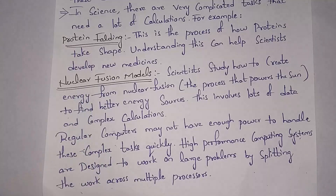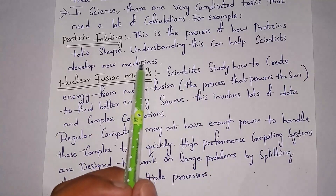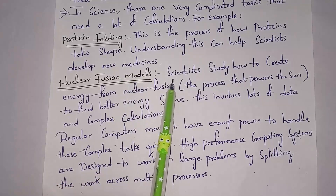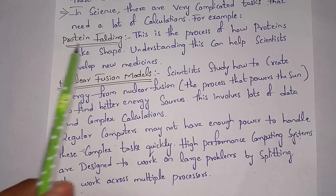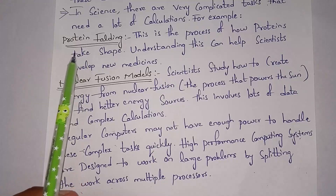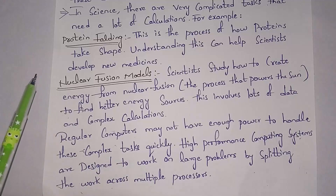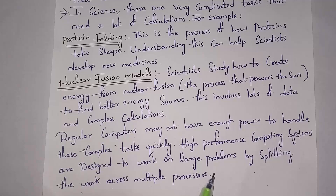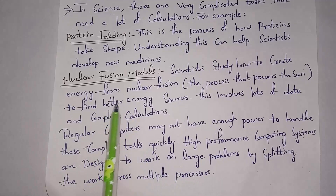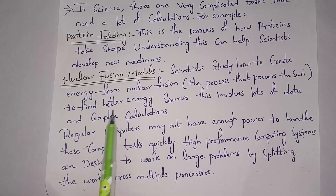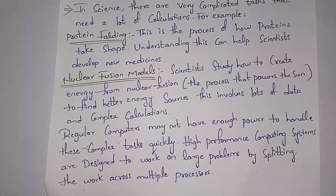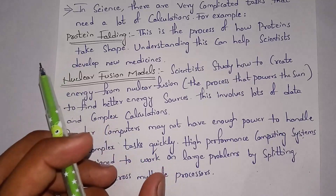In science, complex problems require a lot of calculations. For example, protein folding — the process of how a protein takes shape — requires high performance computing so scientists can develop new medicines. Similarly, nuclear fusion models, where energy is generated using the sun, also require scientists to perform many calculations. For such large-scale problems we need high performance computing, which uses multiple processors to perform complex operations.